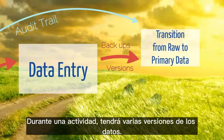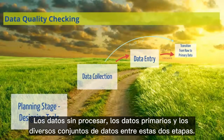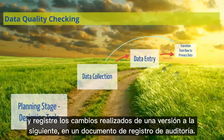During an activity, you are going to have several versions of the data: the raw data, the primary data, and several datasets in between these two stages. It is imperative that you keep track of these versions and record the changes made from one version to the next in an audit trail document.